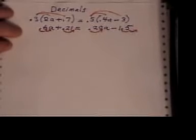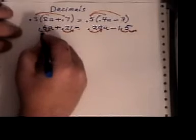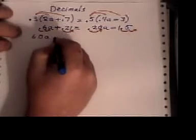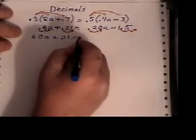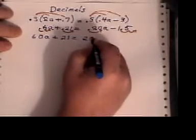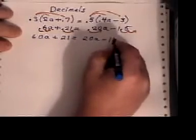And you just have to make sure that you do it to every term. So if I move the decimal two places to the right, I'll get 60a. 0.21 becomes 21. 0.20a becomes 20a. And 1.5 becomes 150.